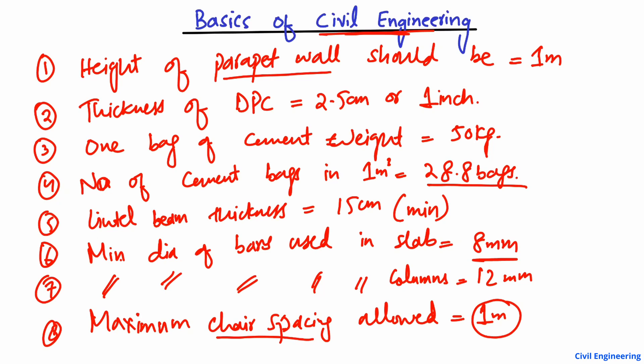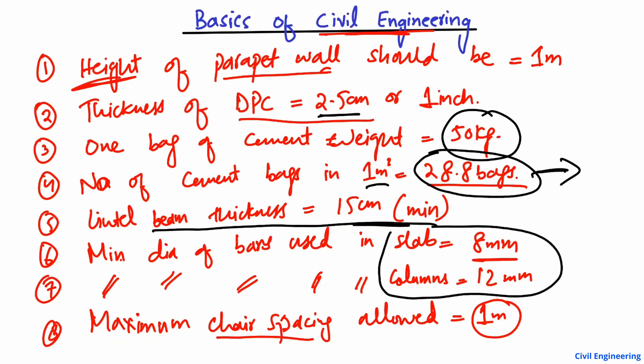These were some of the important points that you should keep in mind during construction, during design of elements, or in any part of an exam. You should remember these points by heart. These are standards: the height of parapet wall, the thickness of DPC, the cement bag weight, the number of bags in one cubic meter, the lintel beam thickness, the minimum diameter of bars for slab and column, and the chair spacing. Sometimes these kinds of questions come in exams. Hope you guys understand today's lecture. Don't forget to subscribe for daily civil engineering videos. Thank you for watching.